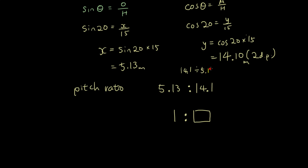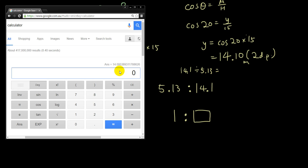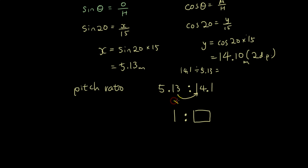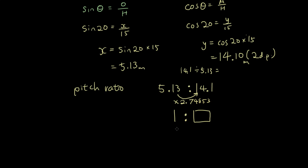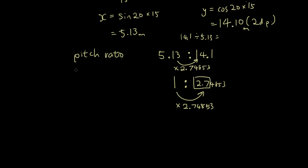14.1 divided by 5.13, and the answer is 2.74853. So to go from this number to this number, you have to multiply by 2.74853. We're going to repeat the same thing here because these two are equivalent ratios. So you multiply by the same thing: 2.74853. These two ratios are the same, so this is more simplified. The pitch ratio answer is 1 to 2.74853.